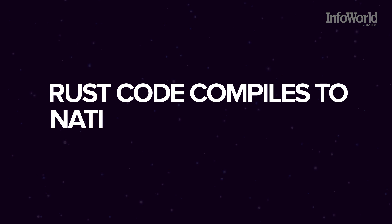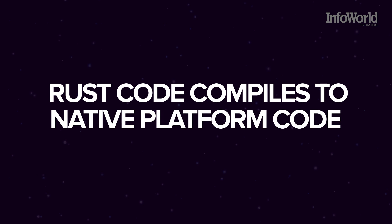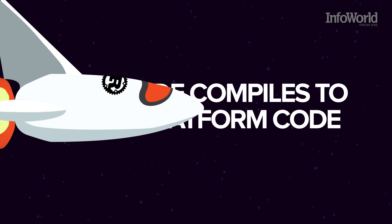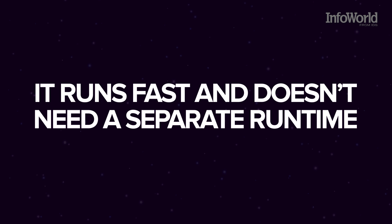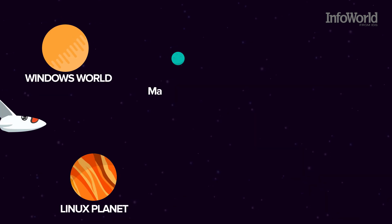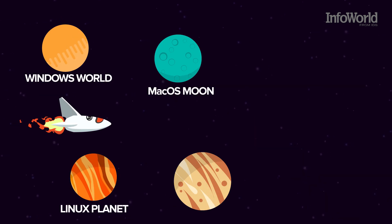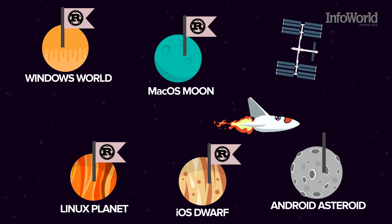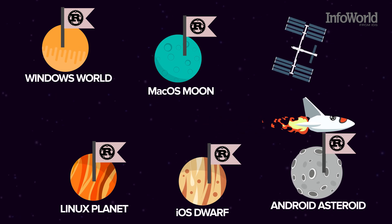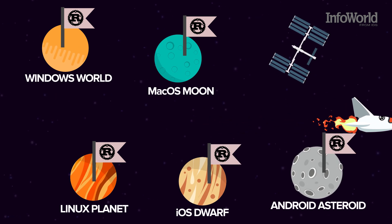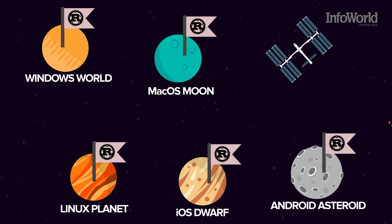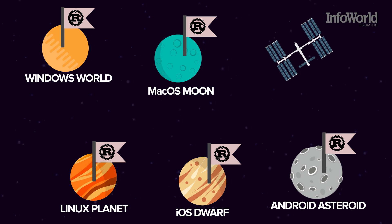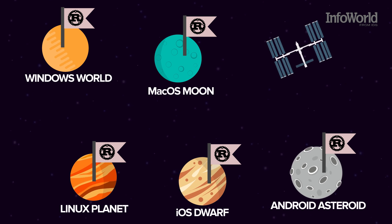Rust code compiles to native platform code like C or C++, so it runs fast and doesn't need a separate runtime. The Rust compiler can build binaries for Windows, Linux, macOS, iOS, and Android, so you can do your coding in any operating system you like and know the code will work on all the rest.